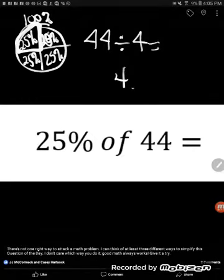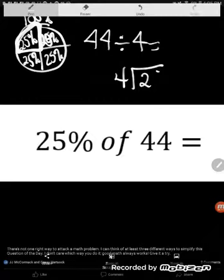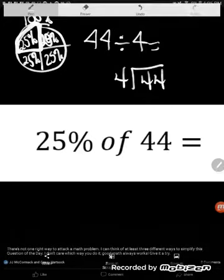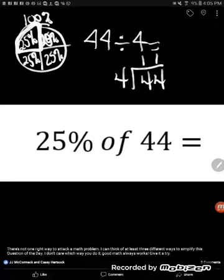This is the simplest way. And again, this only works because, whoa, I just wrote the wrong number. This only works because 25% is 100% broken into four equal pieces. So I'll just divide here. Divides perfectly, and I get 11.